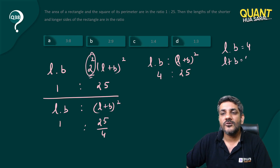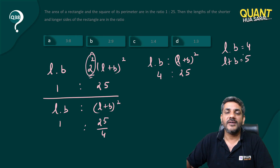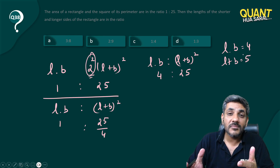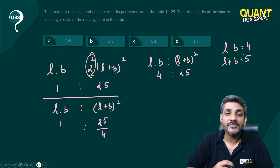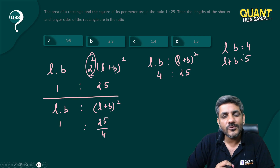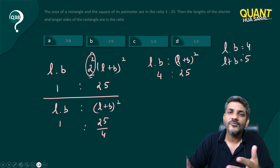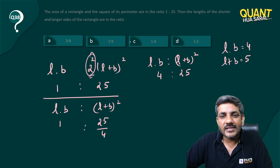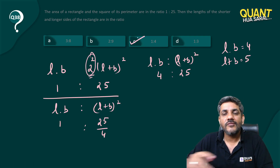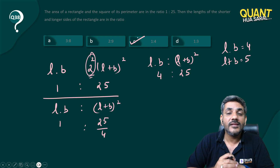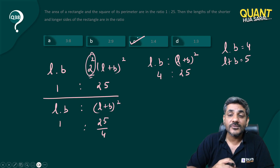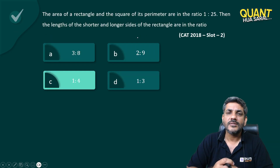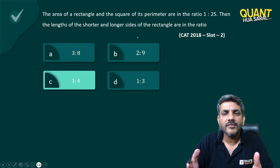So I reach a point where the product of two numbers is 4 and the sum of those two numbers is 5. The numbers are 1 and 4, so the ratio of the smaller to the longer side is 1 is to 4. That is the answer.